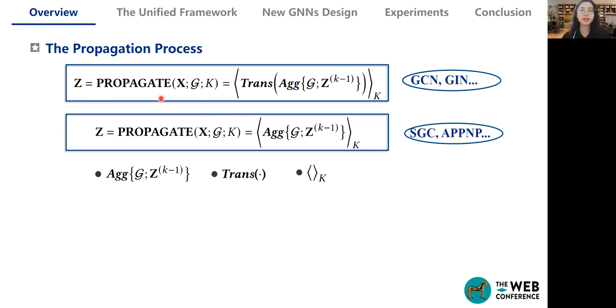To better understand the propagation mechanism of graph neural networks, we first summarize the k-layer propagation process mainly as the following two forms. Here, we use Agg and Trans to represent the most important parts during propagation. We use the first line to represent graph neural networks which need layer-wise feature transformation, and the second line to represent deep graph neural networks which decouple the layer-wise transformation. We use the combination k to represent how to get the output embeddings. For example, directly use the last layer output or use concatenation or attention to combine other layer outputs.